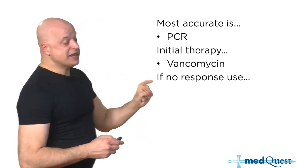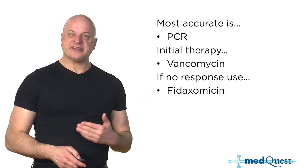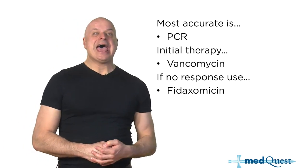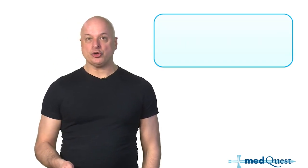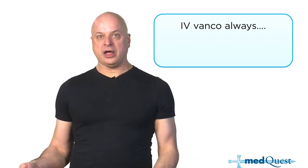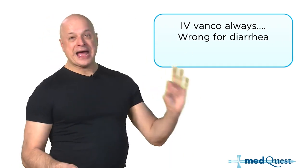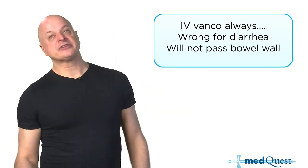Fidaxomycin is more expensive but has better efficacy than metronidazole. Fidaxomycin is both an alternative to vancomycin for acute therapy and also prevents recurrences. Bezlotoxumab is a monoclonal antibody that stops recurrences — it's an antibody to C. diff toxin. IV vancomycin is used daily but not for things that are inside your bowel, because oral won't penetrate the bowel wall to go systemic and IV won't penetrate the bowel wall to go into the bowel.